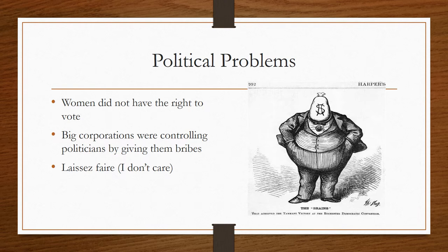Some examples of political problems that Progressives hoped to solve: women did not have the right to vote during this time period, big corporations were controlling politicians by giving them bribes, and they also wanted the government to have more regulations on businesses which would protect consumers and their workers. They wanted to see an end to the laissez-faire policy where the government basically said, 'We're staying out of it — laissez-faire, I don't care.'